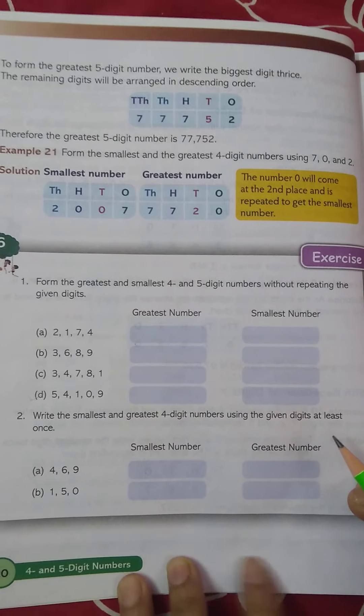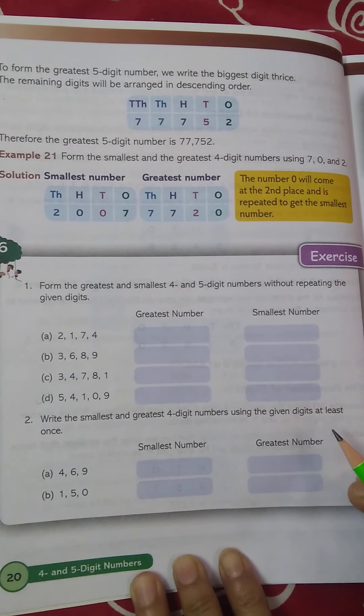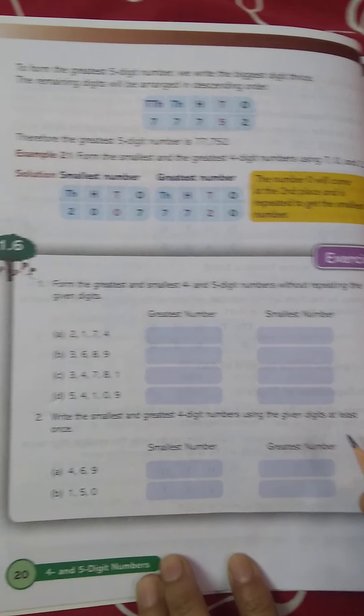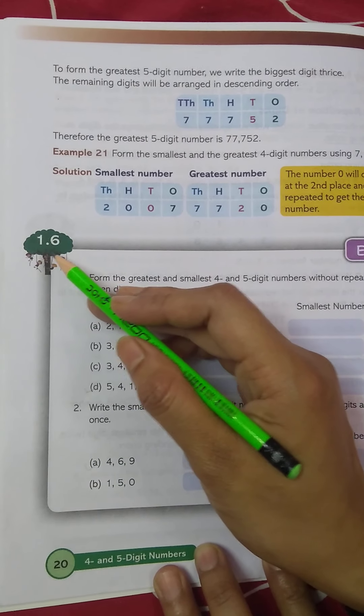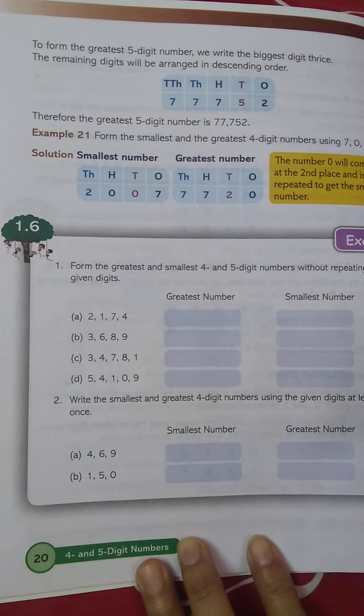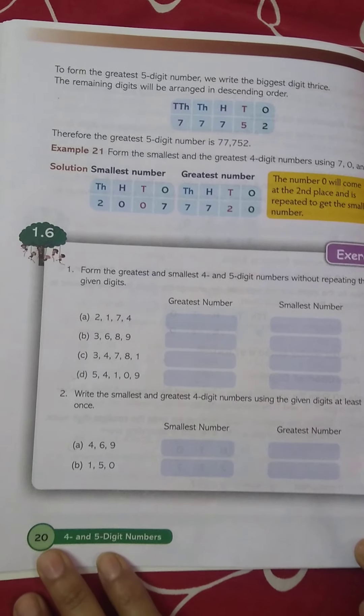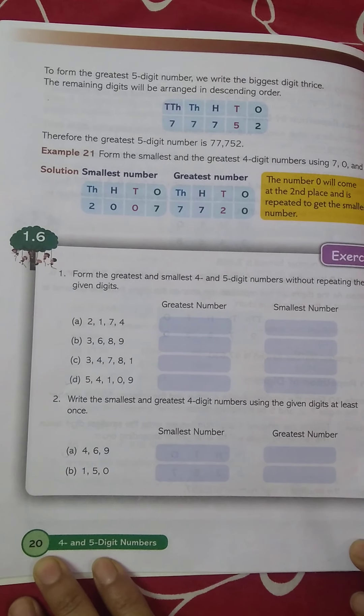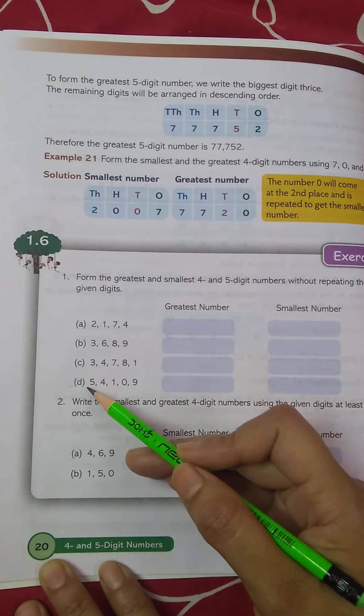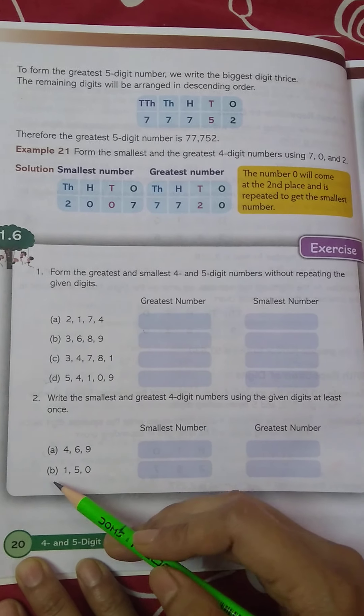Students, in your previous class we have done exercise 1.5 in the copy, right? Today we will do exercise 1.6 in the copy. So it will be found on page number 20 of your maths book. Question number 1, 4 parts. Question number 2, 2 parts.